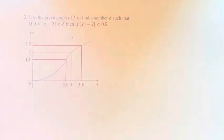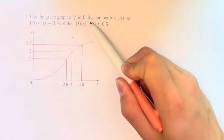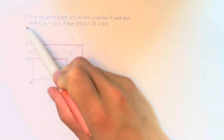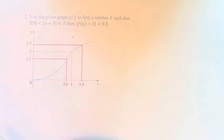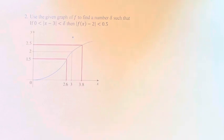Hello, and welcome back to another video. In this problem, we're asked to use the given graph of f to find a number delta such that if 0 is less than the absolute value of x minus 3 is less than delta, then the absolute value of f of x minus 2 is less than 0.5.